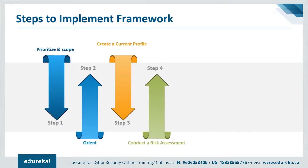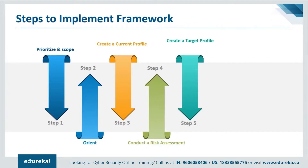Step 4 is to Conduct a Risk Assessment. This assessment could be guided by the organization's overall risk management process or previous risk assessment activities. The organization analyzes the operational environment to discern the likelihood of a cybersecurity event and the impact it could have on the organization. It is important that the organization identify emerging risks and use cyber threat information from internal and external sources to gain a better understanding of the likelihood and impact of cybersecurity events.